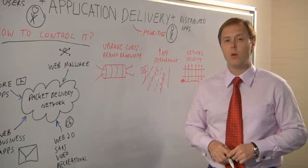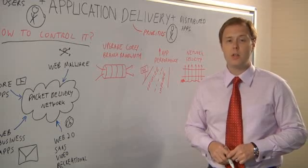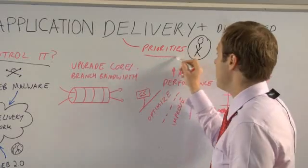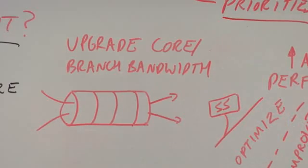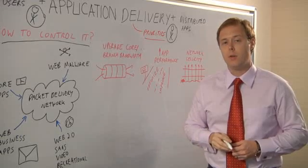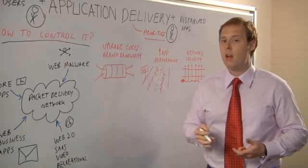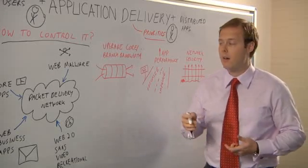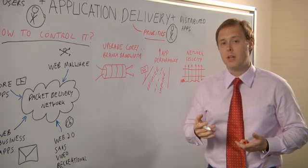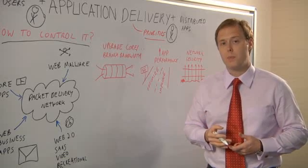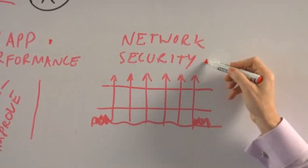Given this new and challenging network environment, the CIOs we surveyed gave us three priorities. The first is upgrading core and branch bandwidth to solve the application delivery issue, but as we'll discuss, this may not be required. The second area is improving application performance by optimizing and improving the existing network.